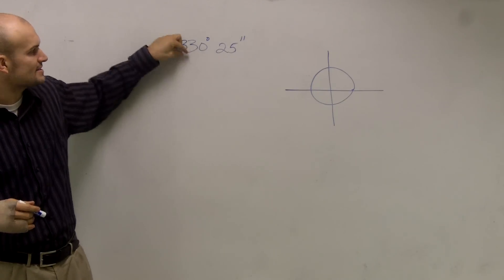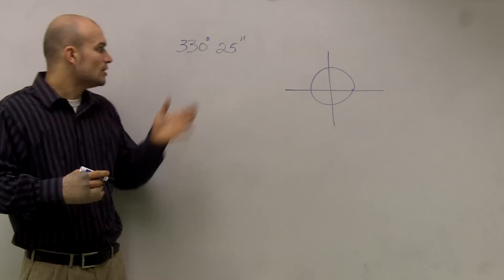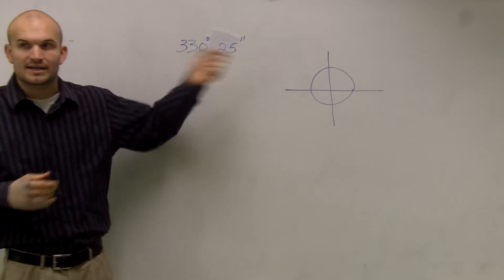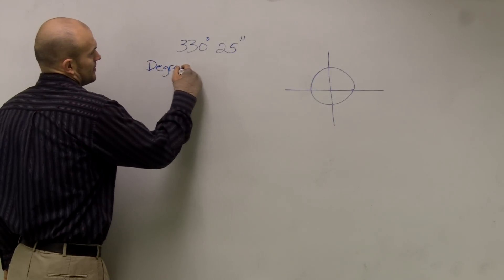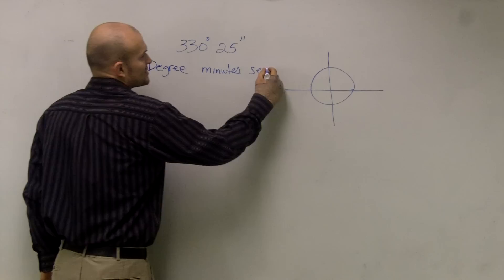And what this question asks is, write this in decimal form of your degree. So I want a degree that's actually going to give me a decimal. Right now, what this reads is 330 degrees and 25 seconds. Well, when you write an angle, there's a degree, you have your minutes, which we don't have in this problem, and your seconds.